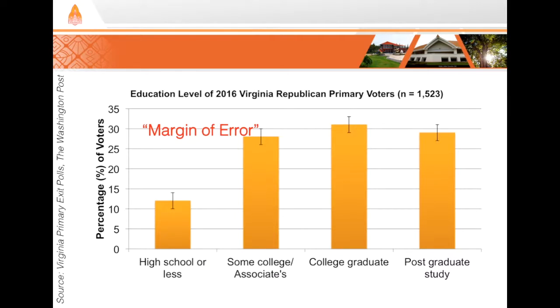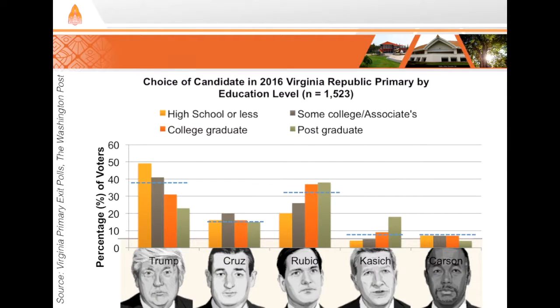I'd also like us to look back at how those education levels were distributed among the five candidates at that time. We observe that it looks like there is some difference in voter preference among the education levels. For example, less educated voters seem to prefer Trump.